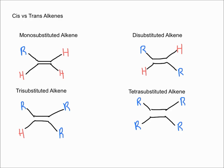First, we need to define the different types of alkenes: monosubstituted, disubstituted, trisubstituted, and tetrasubstituted. Monosubstituted alkenes have one R group, meaning three hydrogens attached to the double bond. Disubstituted alkenes have two R groups and two hydrogens. Trisubstituted alkenes have three R groups and one hydrogen. Tetrasubstituted alkenes have four R groups and no hydrogens.